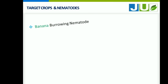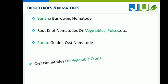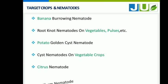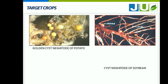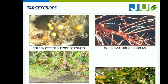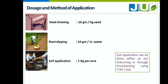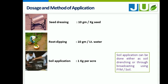We can use Ecopal in all crops to control all kinds of nematodes. For dosages and methods: soil application of 1 kg per acre is recommended. We can also use it for root dipping and seed dressing.